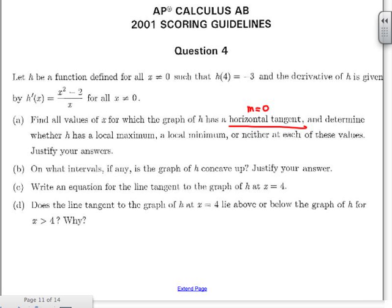I was already given h prime so when I'm talking about the graph of h and its slope that is h prime. So part A I want to find when h prime of x is equal to 0.